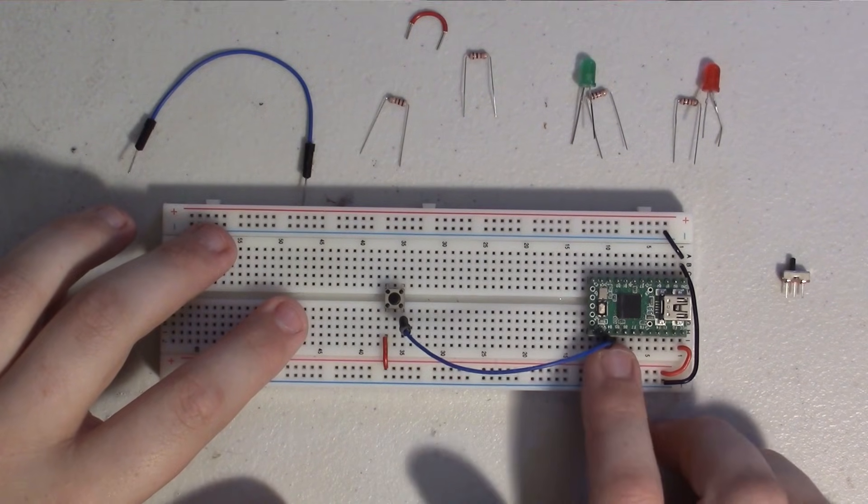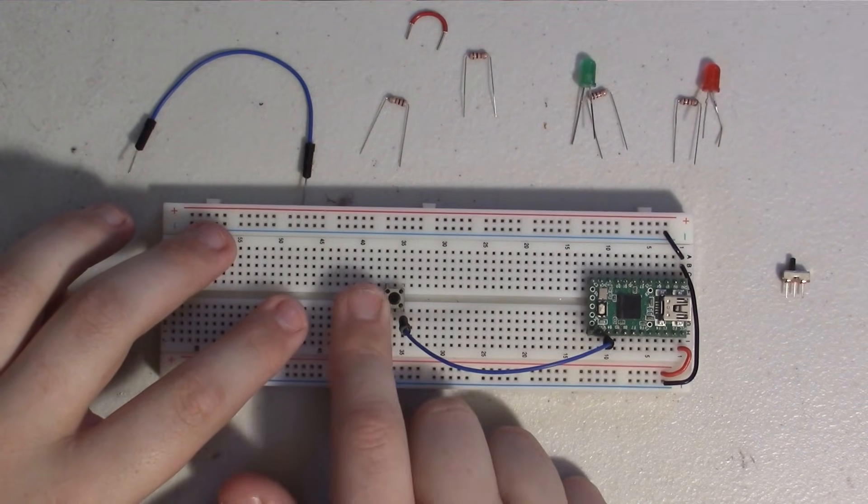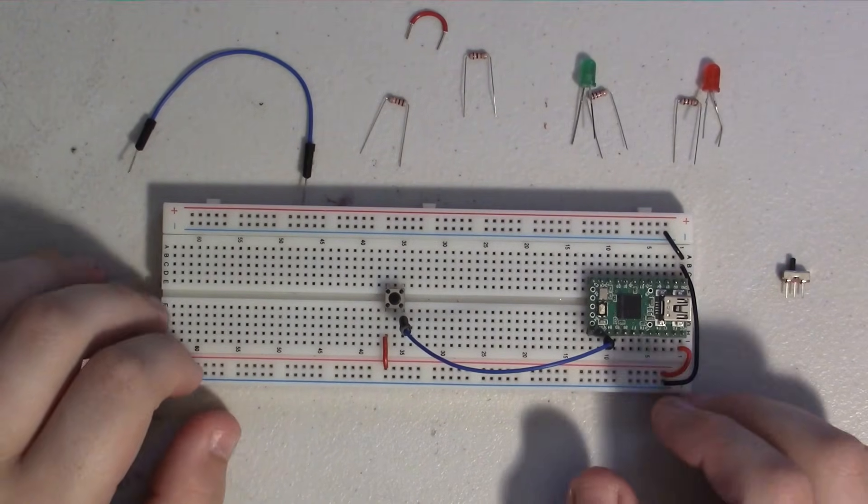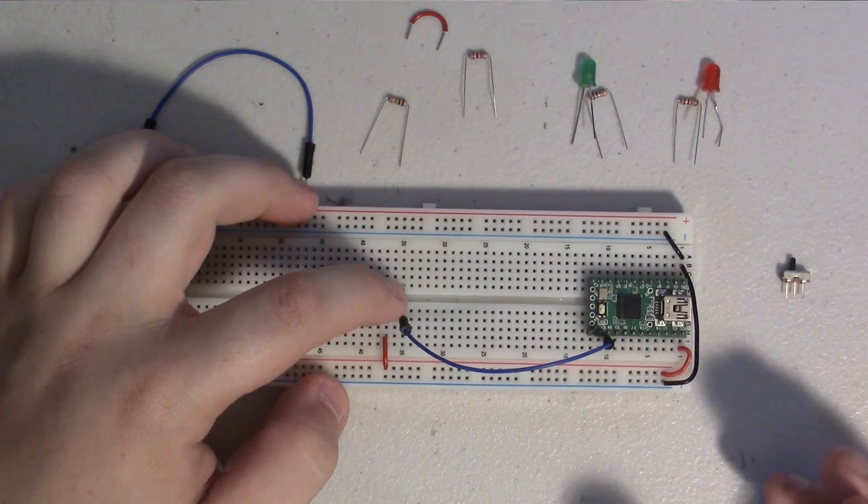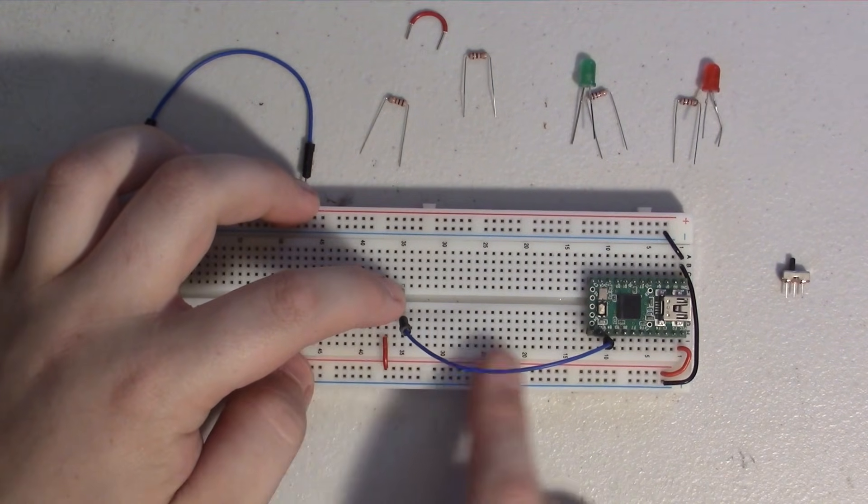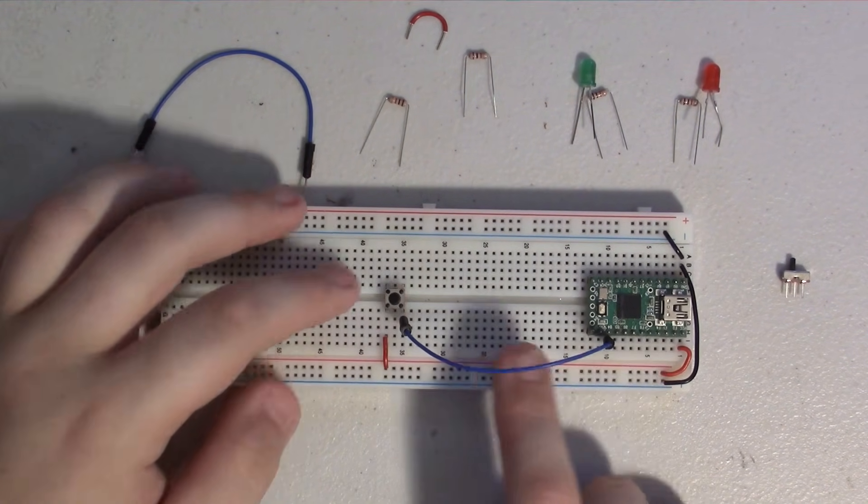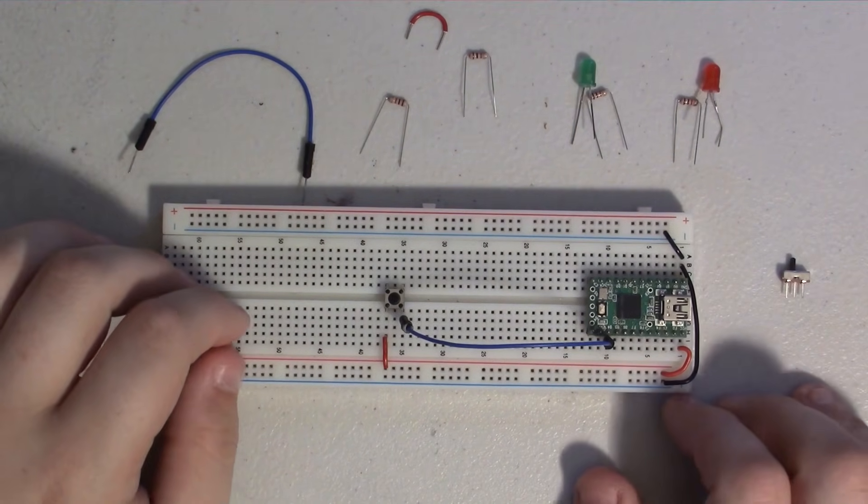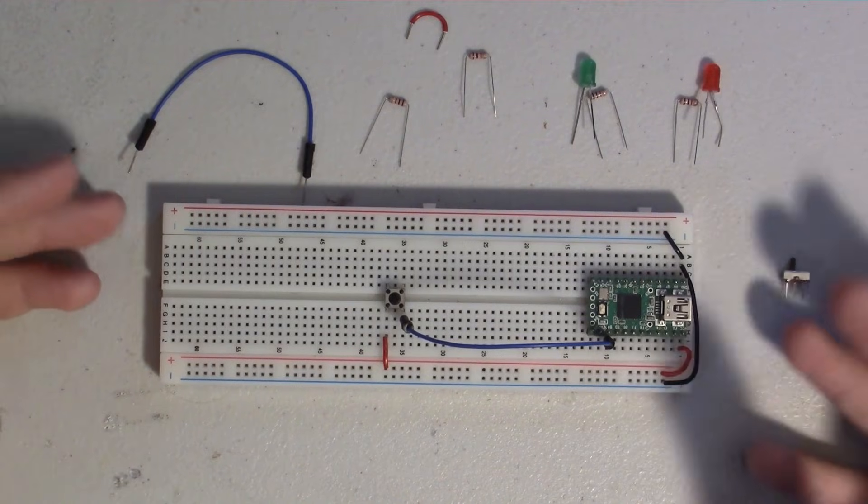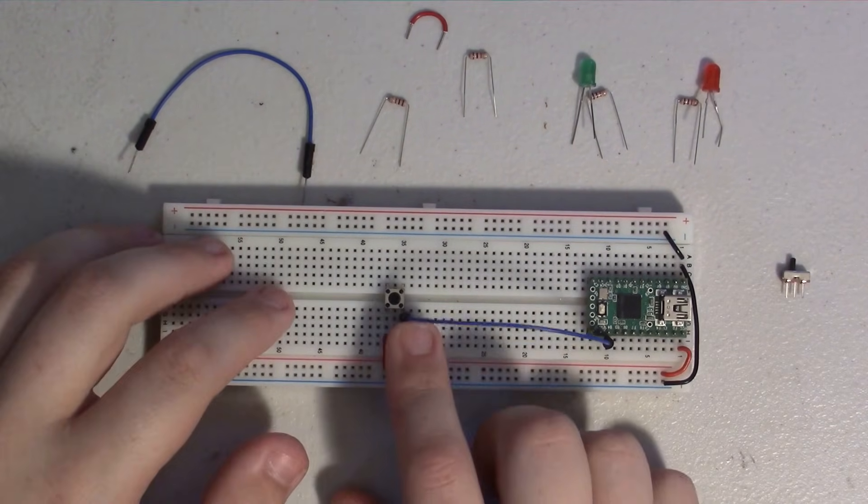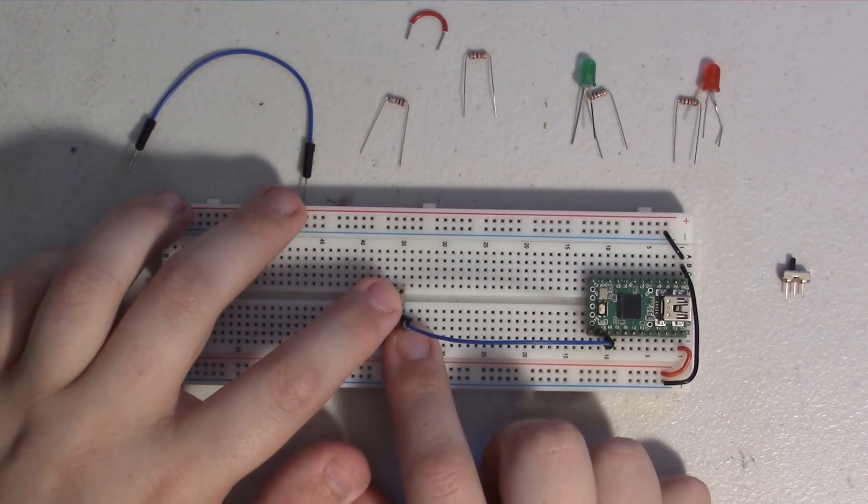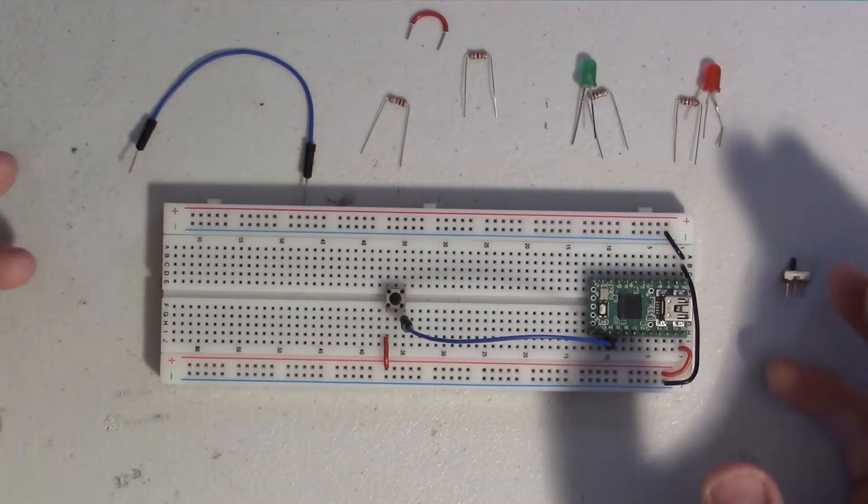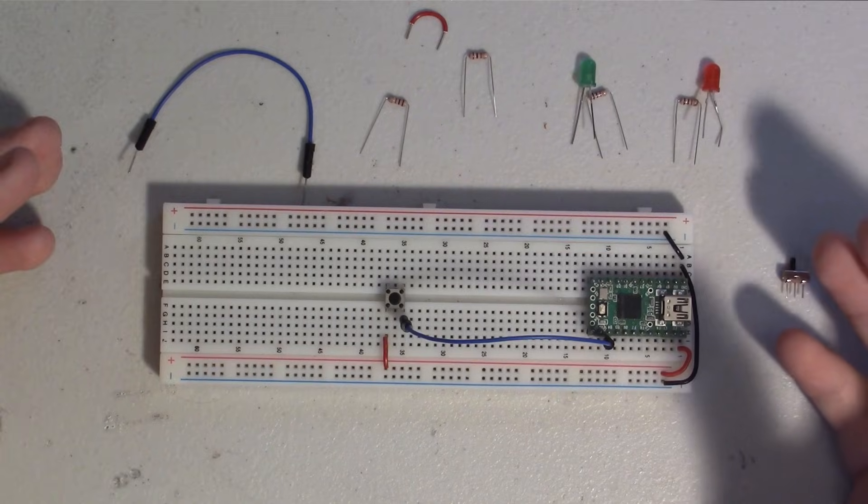So this pin, currently without the button being pressed, has no state—it doesn't have a high or a low. When we push the button, it's high—we're connecting it to our positive, it's being pulled high. We know that. But in order to give it an off state, a low state, we also need to, when the button isn't pressed, connect this pin to something to give it a state.